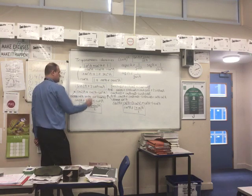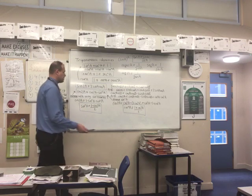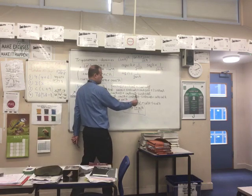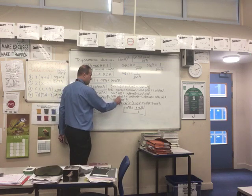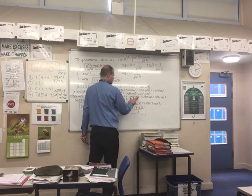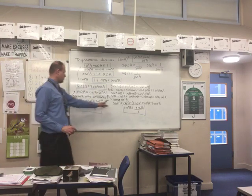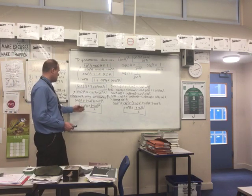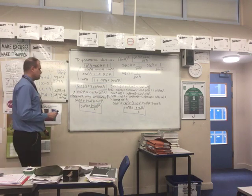Another useful identity is cos2A = cos²A − sin²A. Derive it using cos(A+B) = cosAcosB − sinAsinB with A = B: that gives cos²A − sin²A. These double angle identities are very important for differentiating and integrating sin²A and cos²A.